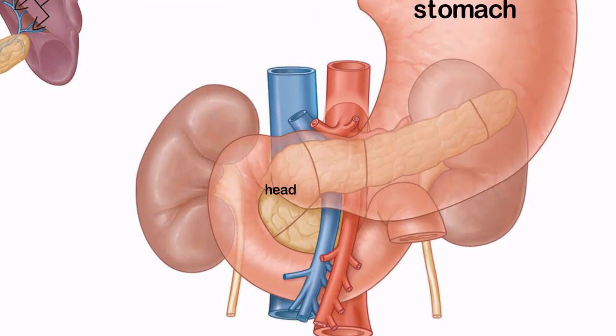The pancreas can be divided into the head, uncinate process, neck, body, and tail.